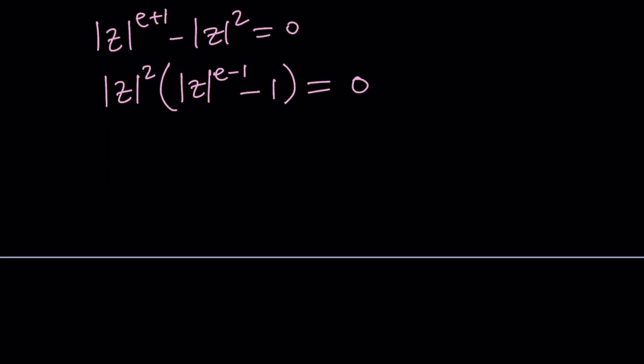Now here's the thing: we have two factors. Set each factor equal to 0. This gives you absolute value of Z equals 0, which immediately implies Z equals 0, because there's only one complex number whose absolute value can be 0, and that is 0.